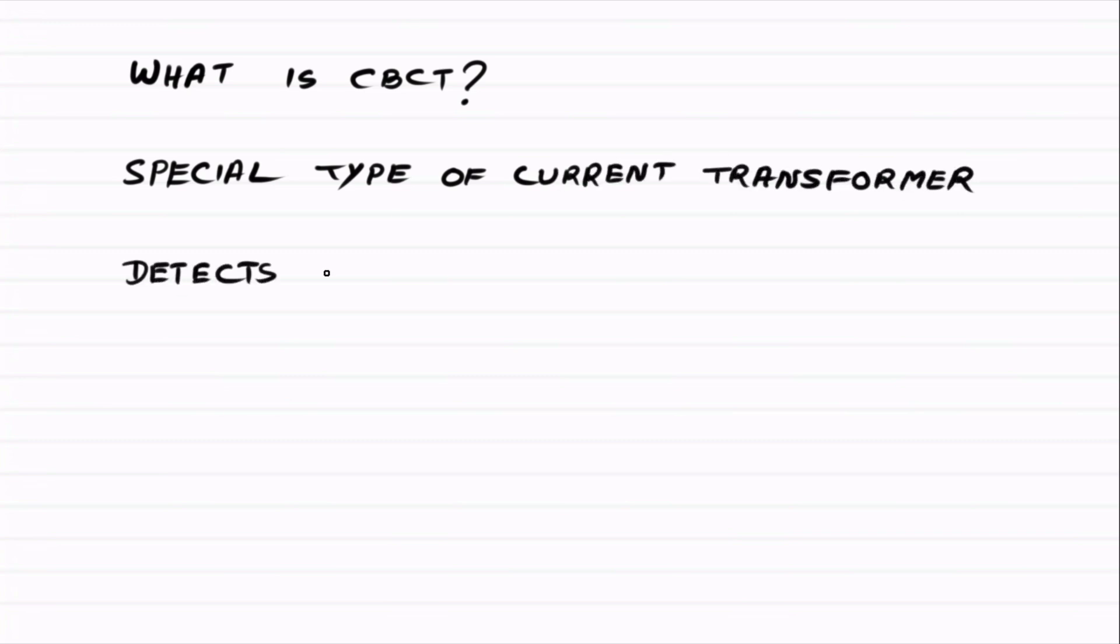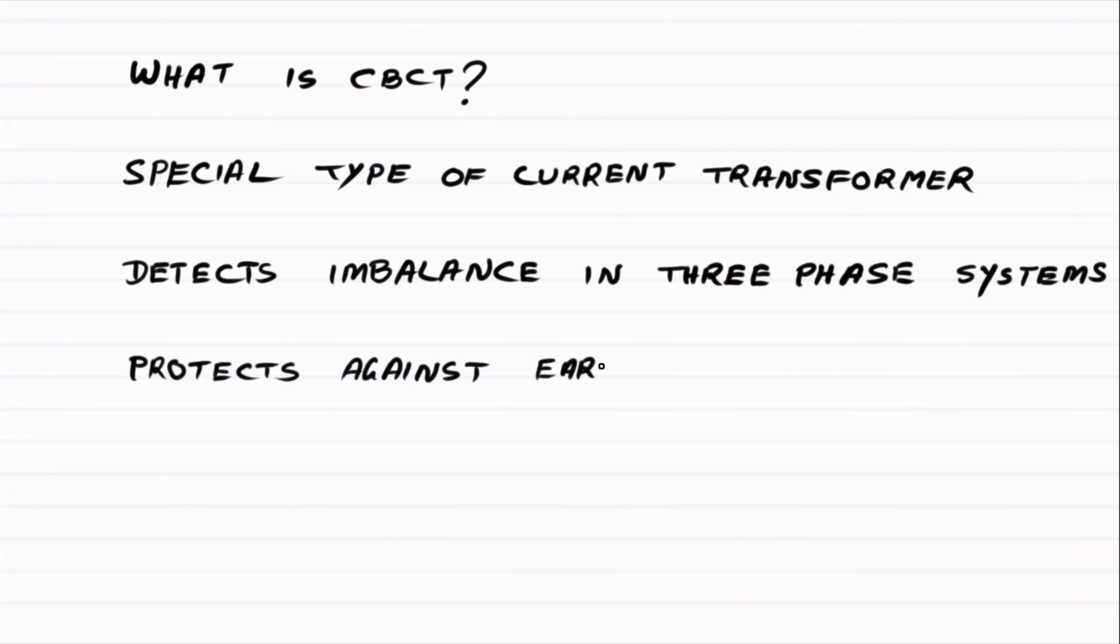Its job is to detect imbalance in a three-phase cable system. When all three-phase currents are balanced, the resultant current is zero. Why? Because the vector sum of red, yellow and blue phase currents, each 120 degrees apart, always cancels out.